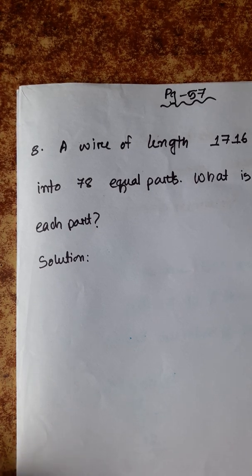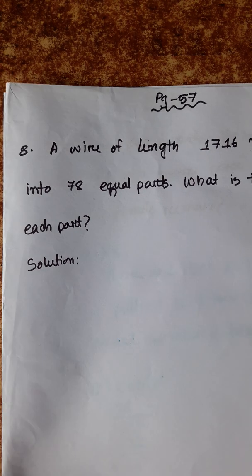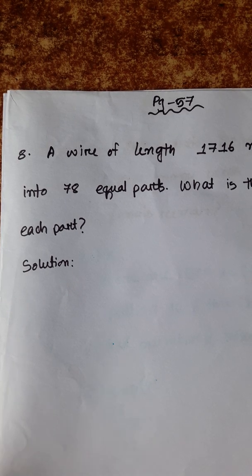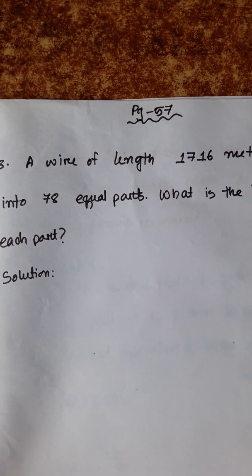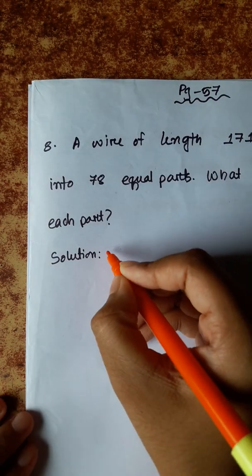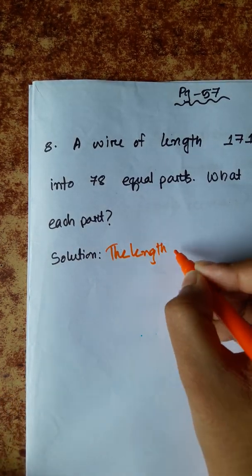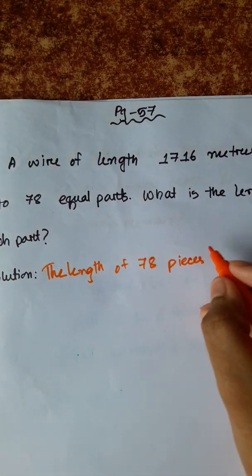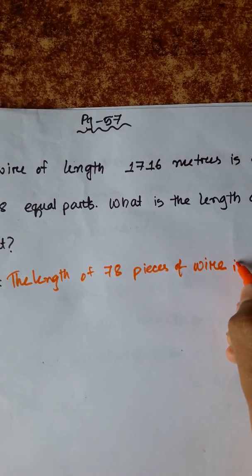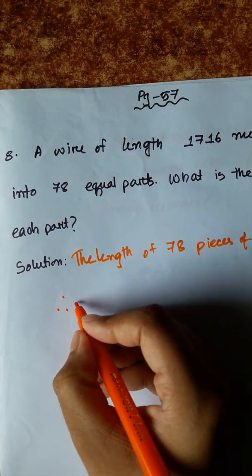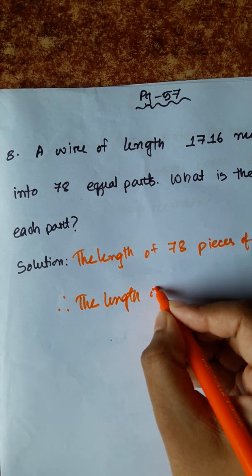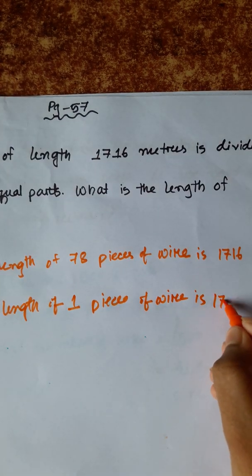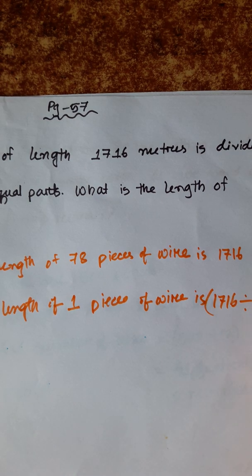This question is: a wire of length 1716 meters is divided into 78 equal parts. What is the length of each part? The length of 78 pieces of wire is 1716 meters. Therefore, the length of one piece of wire is 1716 divided by 78 meters.